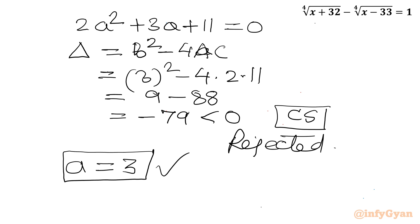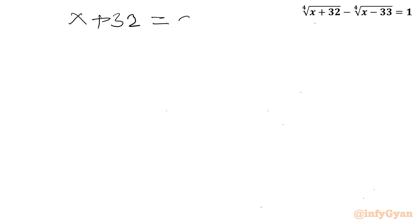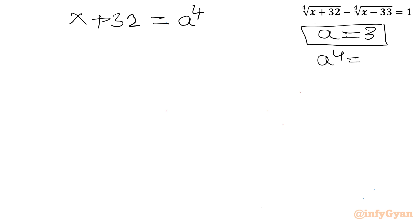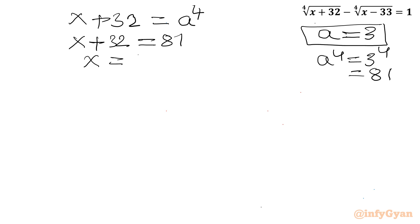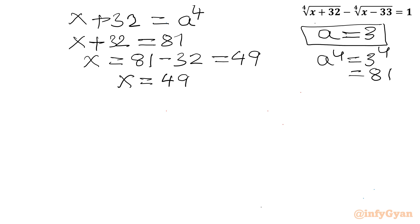Now back-substituting: since a⁴ = x + 32 and a = 3, we get 3⁴ = x + 32, so 81 = x + 32, giving x = 81 - 32 = 49. Our final solution is x = 49.